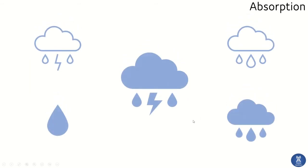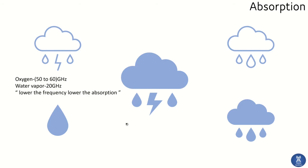Now let's see the effect of absorption on electromagnetic waves. The Earth's atmosphere consists of two main gases: oxygen and water vapor, and both absorb electromagnetic energy. When using 50 to 60 GHz frequency in microwave communication, oxygen molecules absorb more energy from the electromagnetic waves. Since oxygen is everywhere and is constant throughout the Earth, it is highly recommended not to use 50 or 60 GHz frequencies for long-distance links.